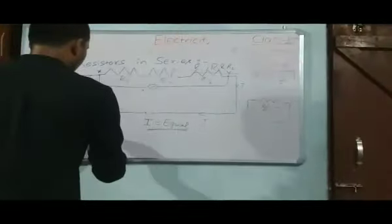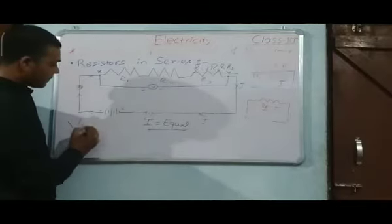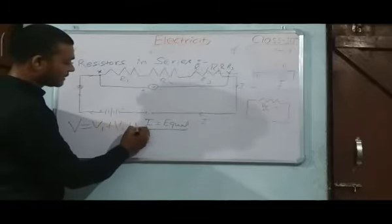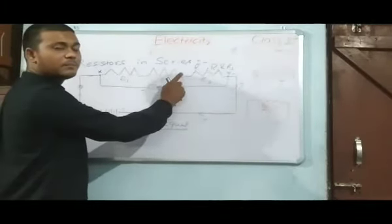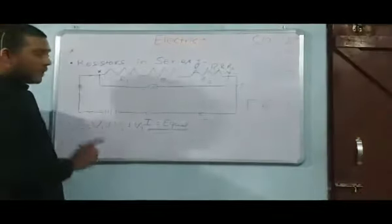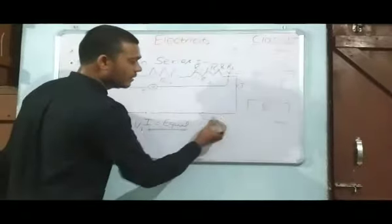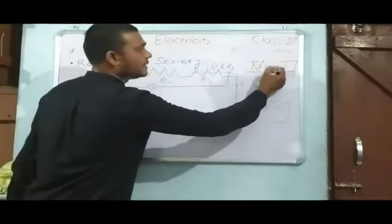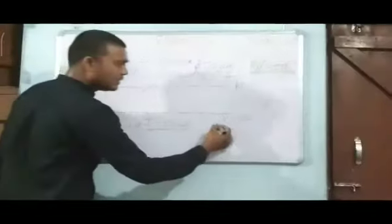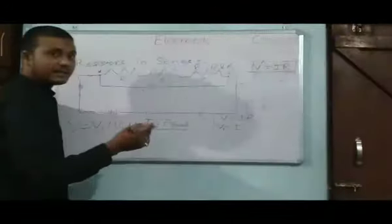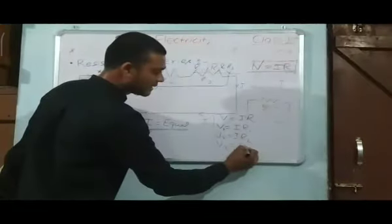The equivalent potential difference is calculated by V1 plus V2 plus V3, where V1 is the potential difference across R1, V2 is the potential difference across R2, and V3 is the potential difference across R3. We know that V equals IR by Ohm's law, so V1 equals IR1, V2 equals IR2 and V3 equals IR3.